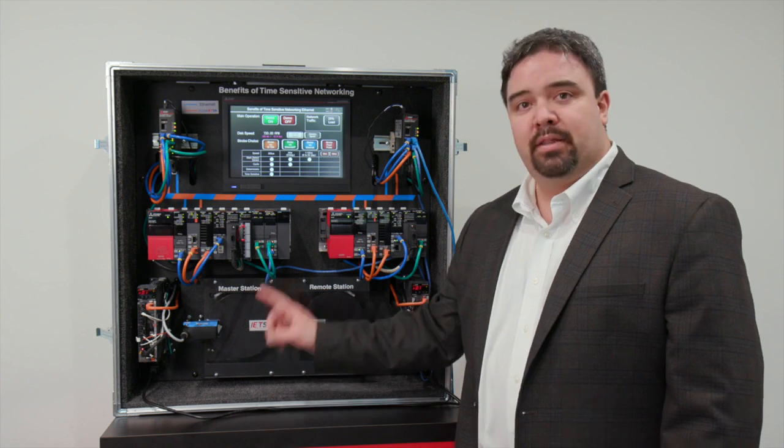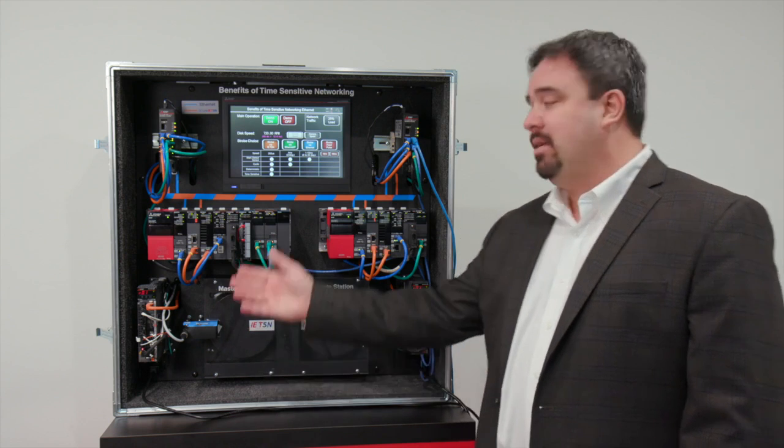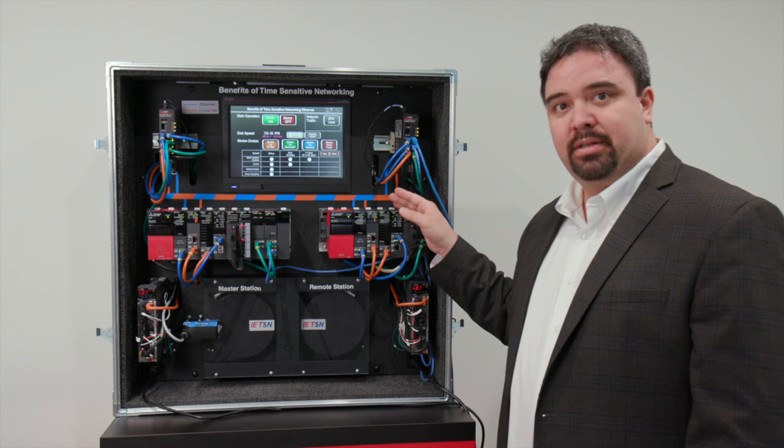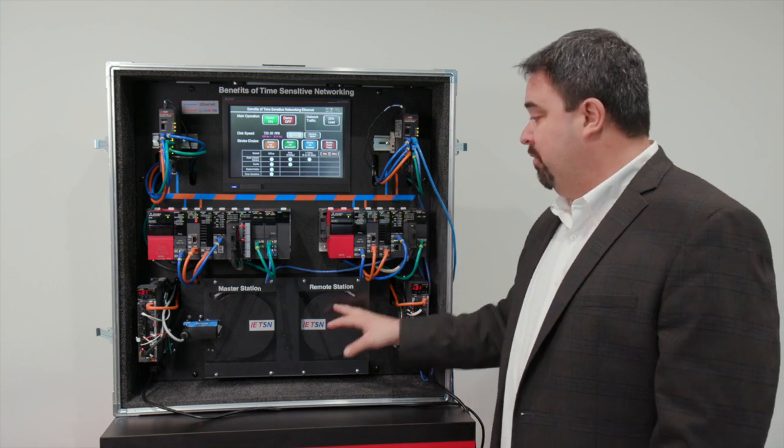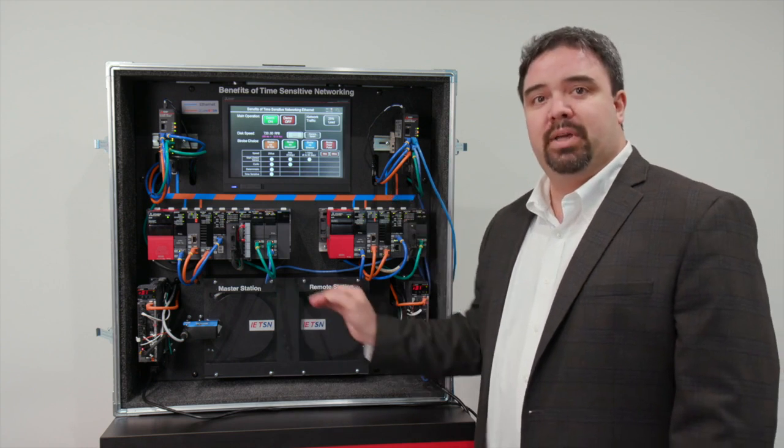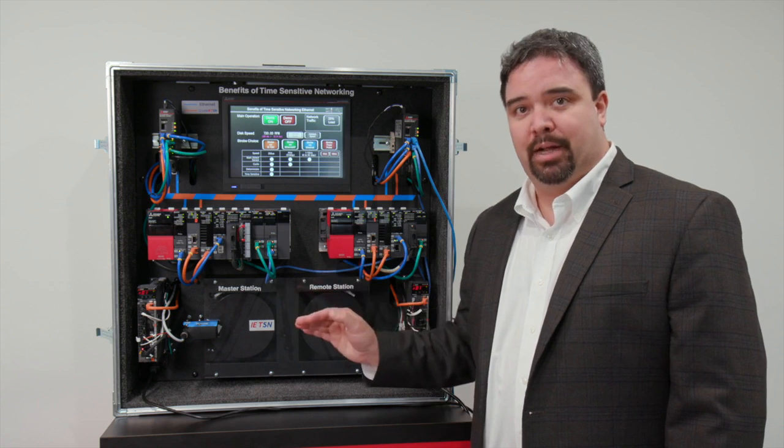We're going to take the speed and the position of this disk and pass it through the network using CC-Link IETSN over to remote station. So both disks will be at the same speed and the same position every single time.